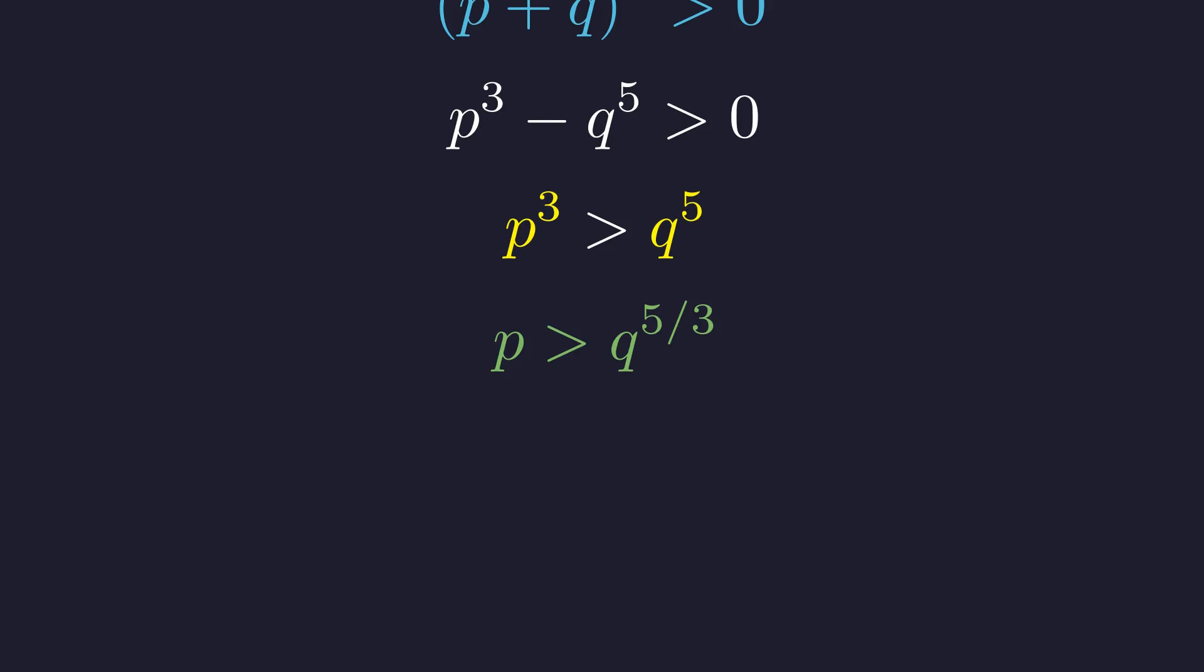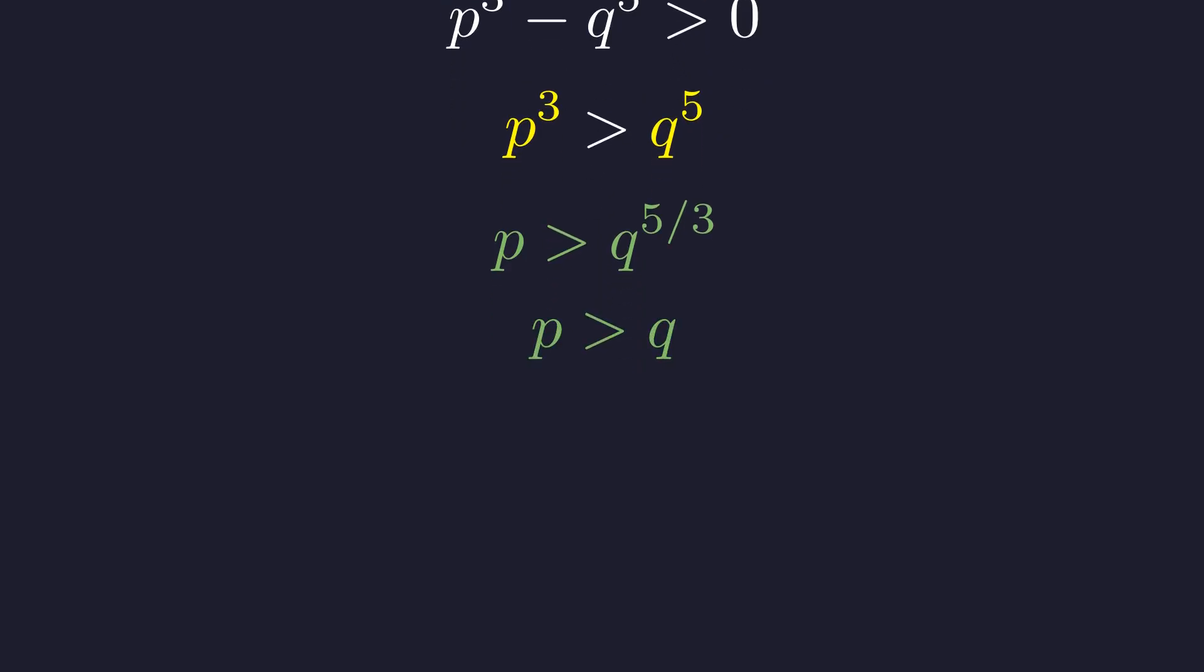Because q is a prime, its smallest possible value is 2. The quantity q to the power of 5 thirds is always greater than q itself. For example, if q is 2, q to the 5 thirds is approximately 3.17, which is greater than 2. This proves that p is strictly greater than q. Consequently, p and q must be distinct primes.